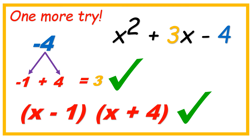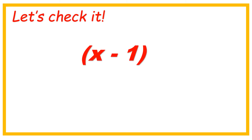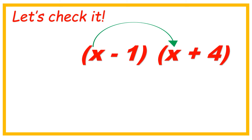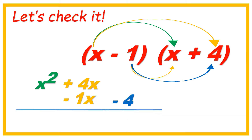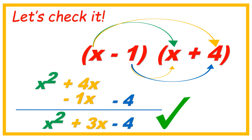Let's check it! x minus 1, x plus 4. x times x is x squared. x times 4 is plus 4x. Negative 1 times x is negative 1x. Negative 1 times 4 is negative 4. x squared plus 3x minus 4. We got it!